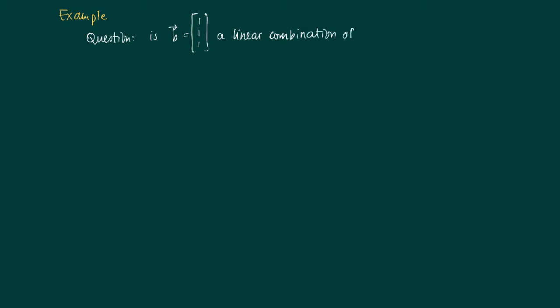Is this vector a linear combination of two others? v1 equals [1,2,3] and v2 equals [4,5,6].